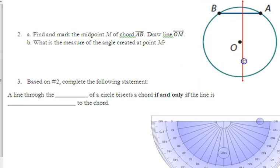Okay, so if we draw a line through the midpoint of AB and the center of the circle, what's the angle measure there? 90 degrees.